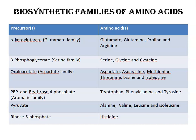Biosynthetic families of amino acids are grouped according to their respective precursors — the starting materials from which amino acids are formed. As you can see in this table, the amino acids are grouped into six families. In the glutamate family, the precursor is alpha-ketoglutarate, and the amino acids formed from it are glutamate, glutamine, proline, and arginine.